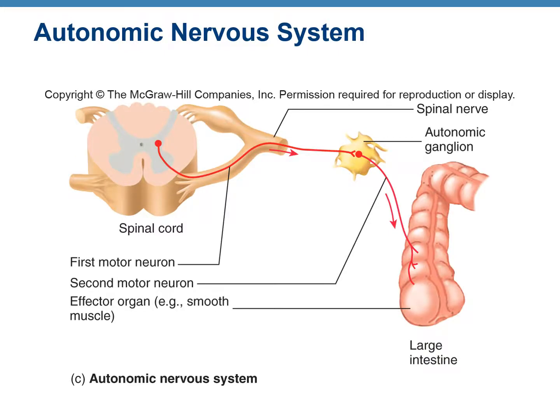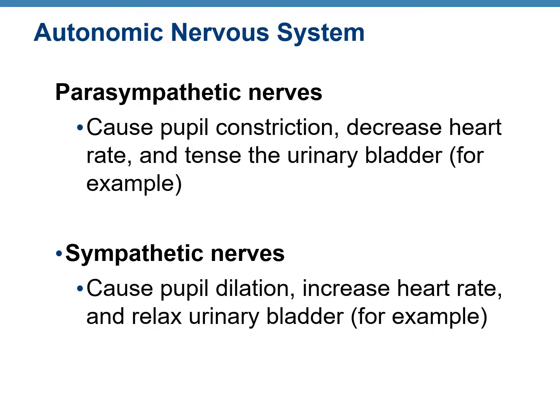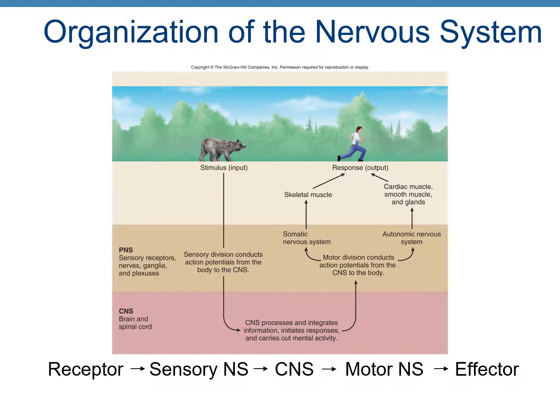This figure shows how neurons, shown in red, carry an electrical signal from the spinal cord to the large intestine. The parasympathetic and sympathetic nerves control the same organs but have opposite effects. For example, parasympathetic nerves cause constriction of the pupil while sympathetic nerves cause pupil dilation. Parasympathetic nerves decrease heart rate while sympathetic nerves increase it. Parasympathetic nerves tense the urinary bladder while sympathetic nerves relax it. This figure is a summary of the organization of the nervous system.